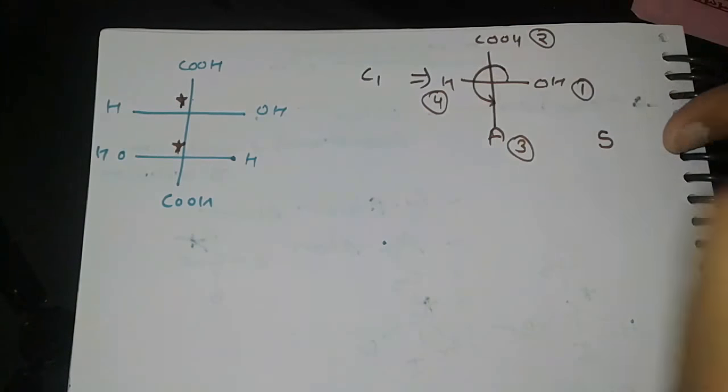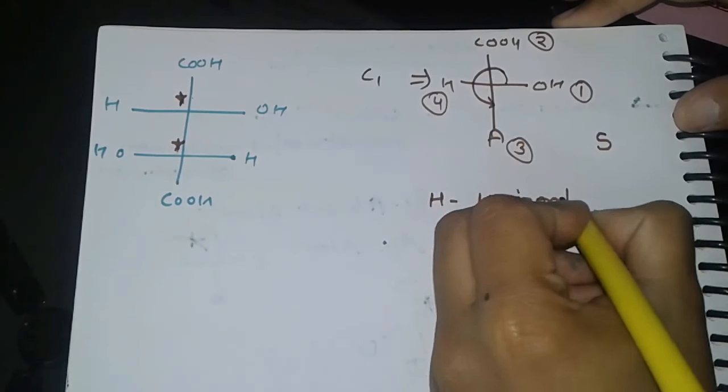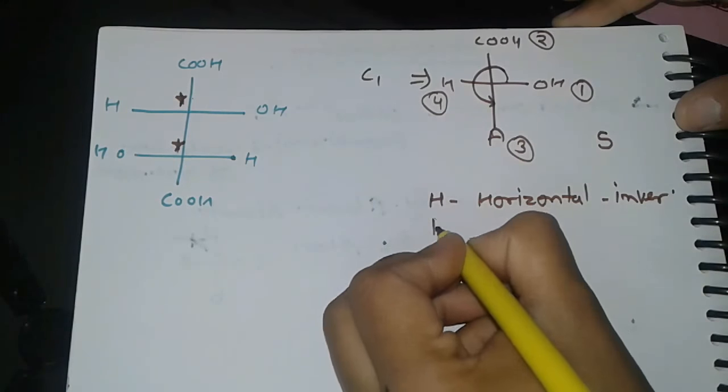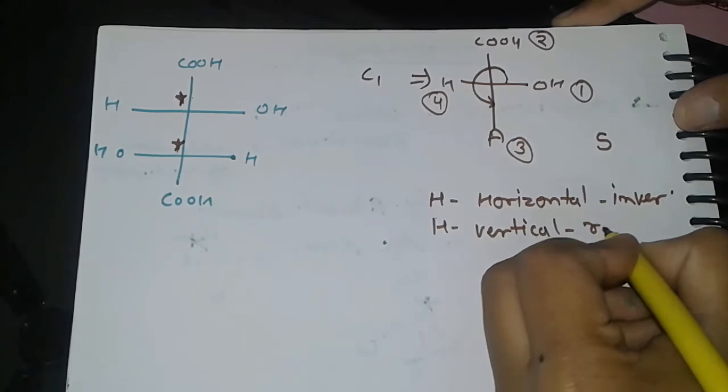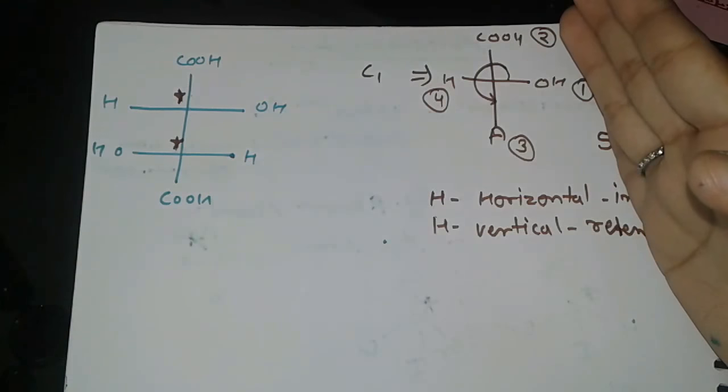If we see what configuration we have to get: one, two, and three—configuration is S. But now we have to see that hydrogen, which is the lowest priority atom, is in horizontal line or vertical line.